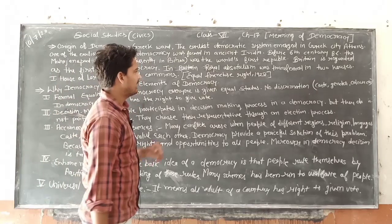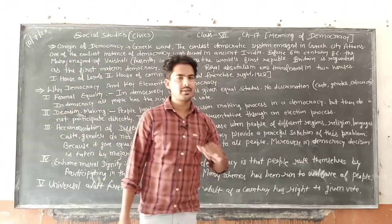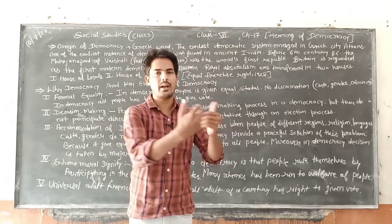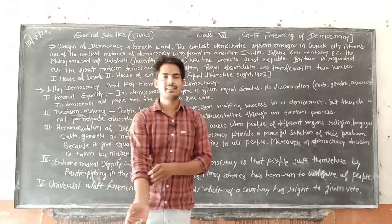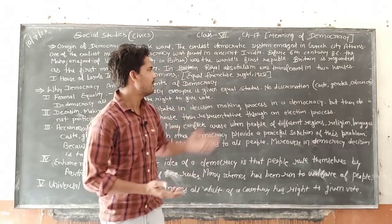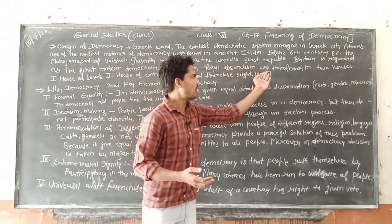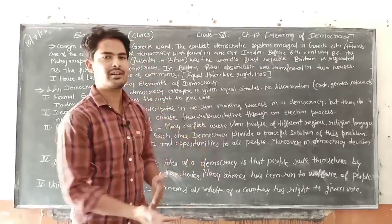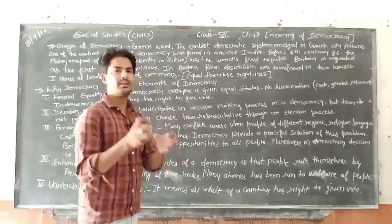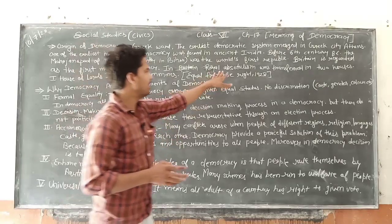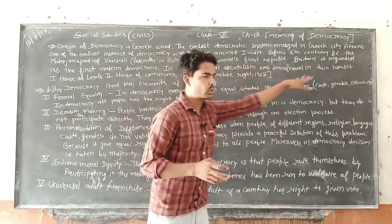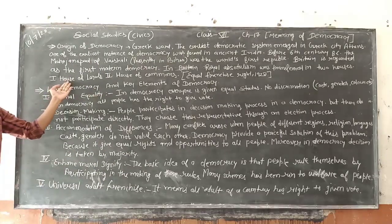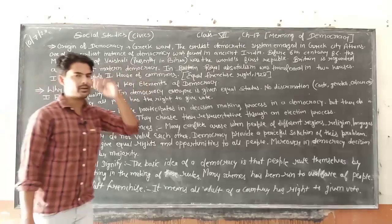In Britain, first there was royal absolutism — the king had complete rule. But after that, royal absolutism was transferred into two houses. The powers were taken away from the king and given to two houses: the House of Lords and the House of Commons.